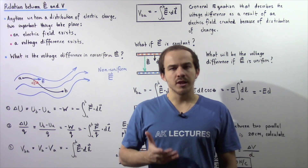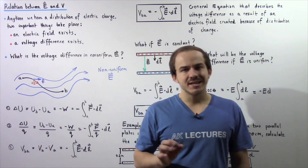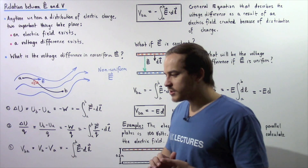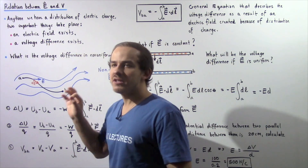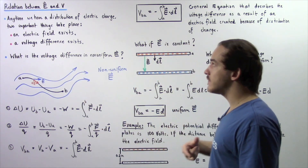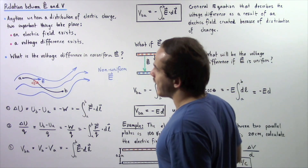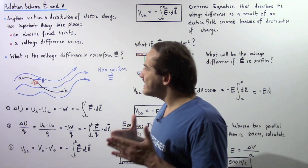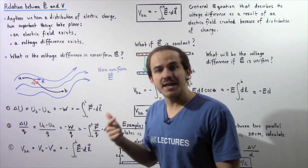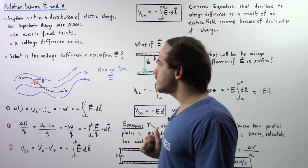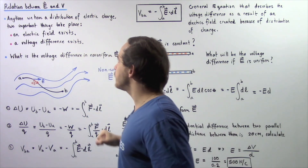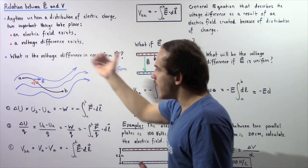Anytime we have a distribution of electric charge, there exist many important things as a result of that distribution. Two important things are listed as follows: we have an electric field that is created, and a voltage difference that exists as a result of a charge distribution between some point A and some point B. In this lecture, we're going to explore the relationship between electric fields and voltage difference.